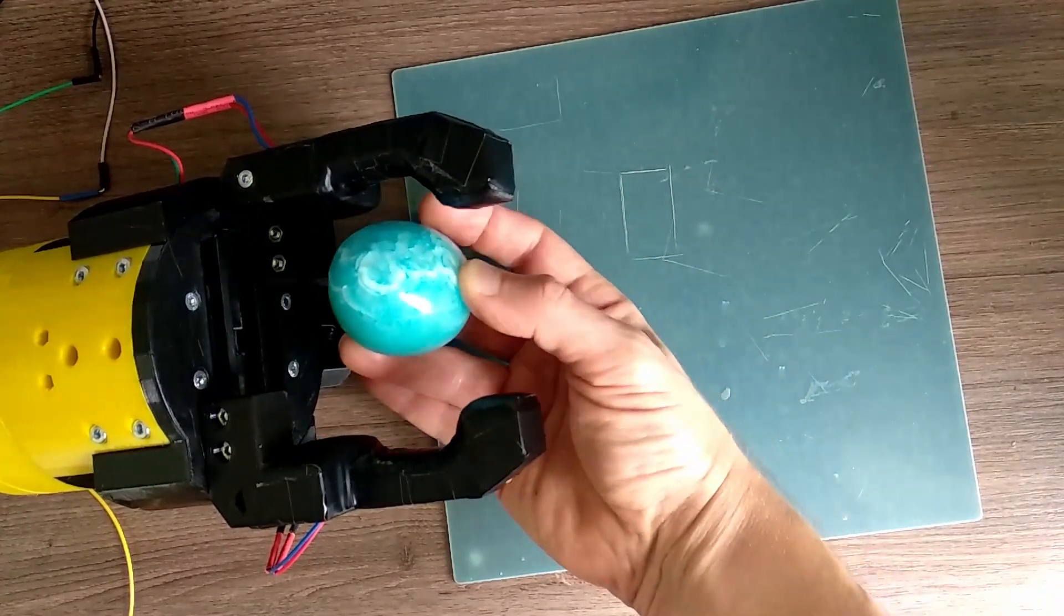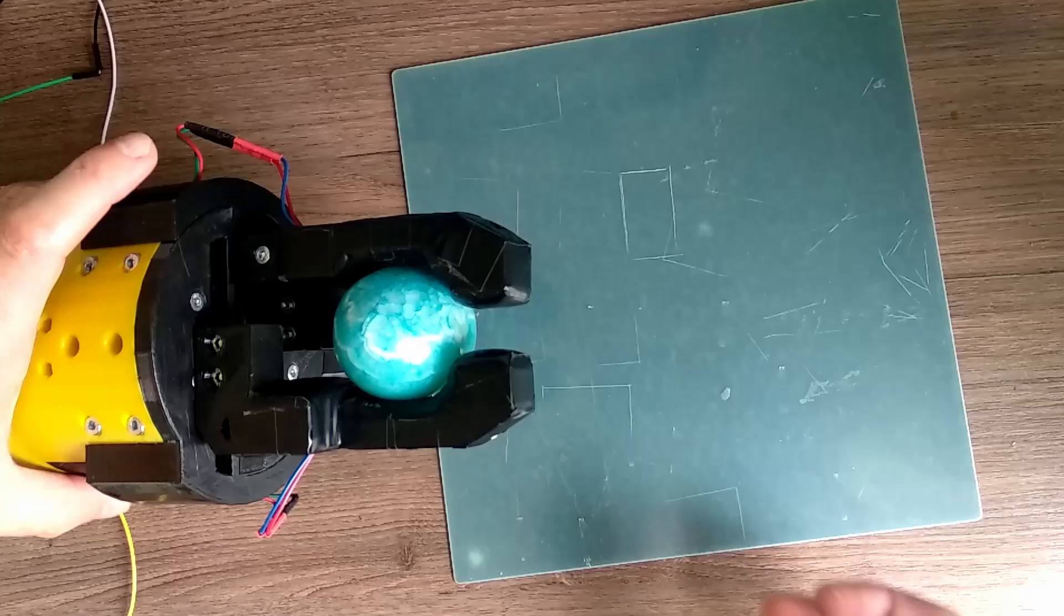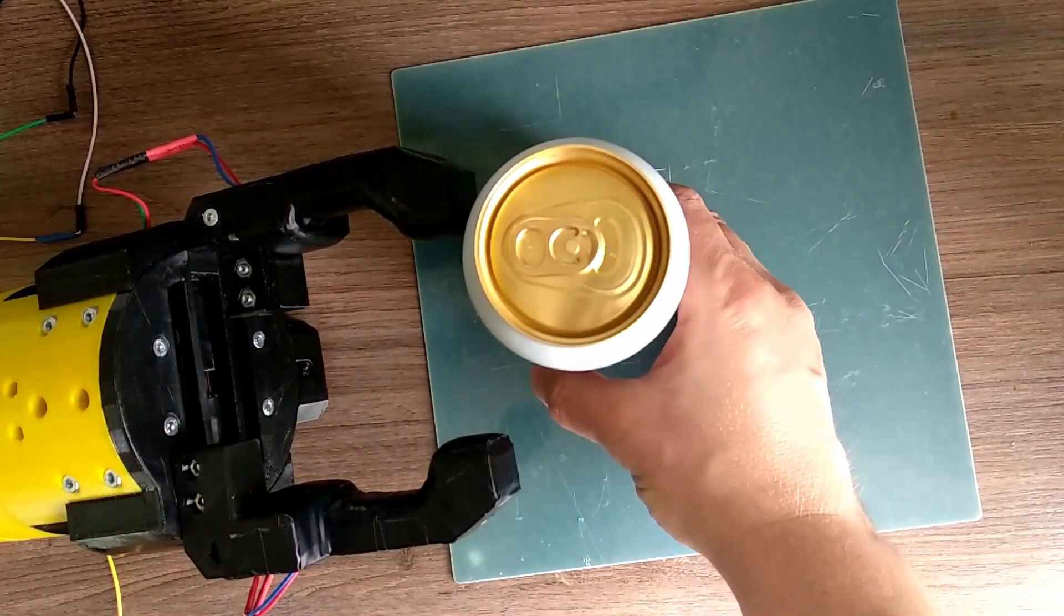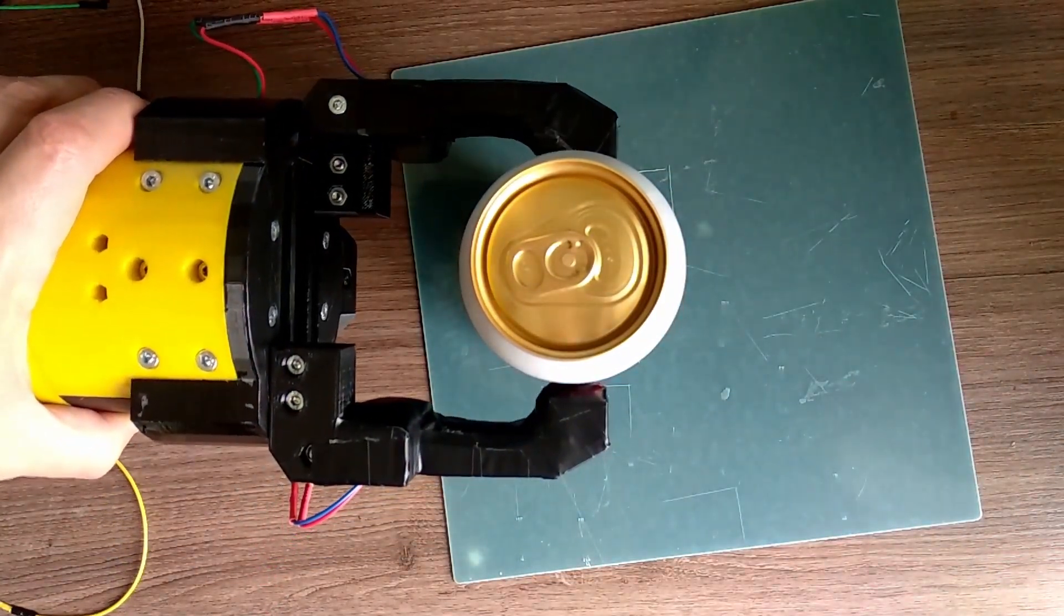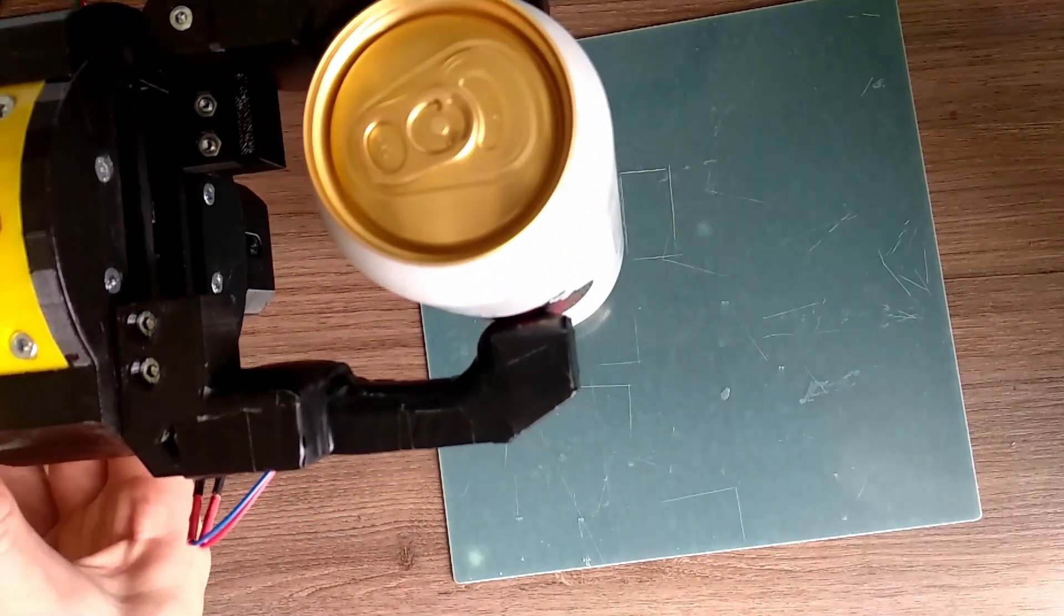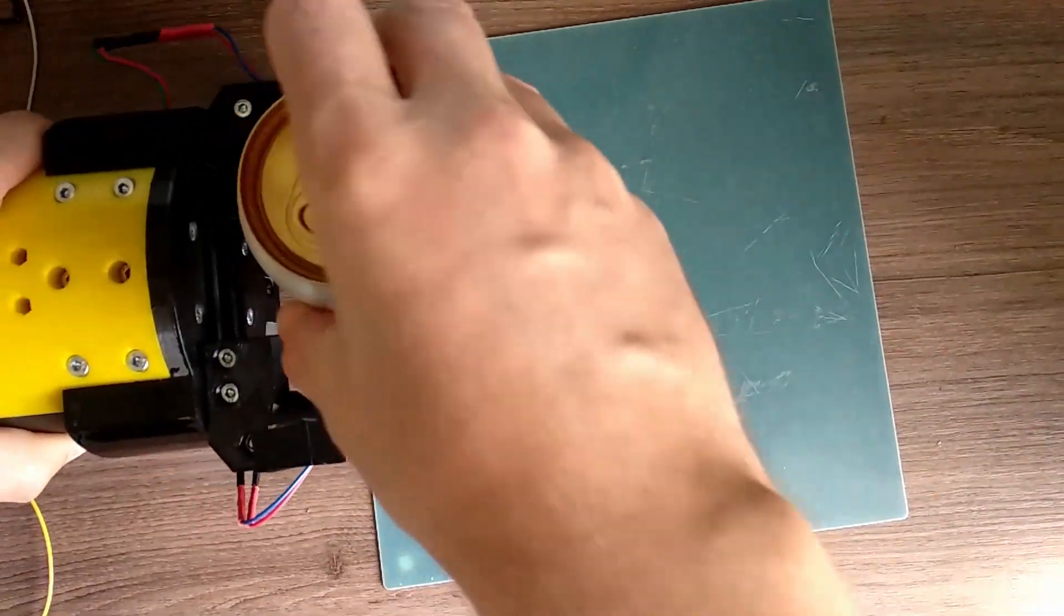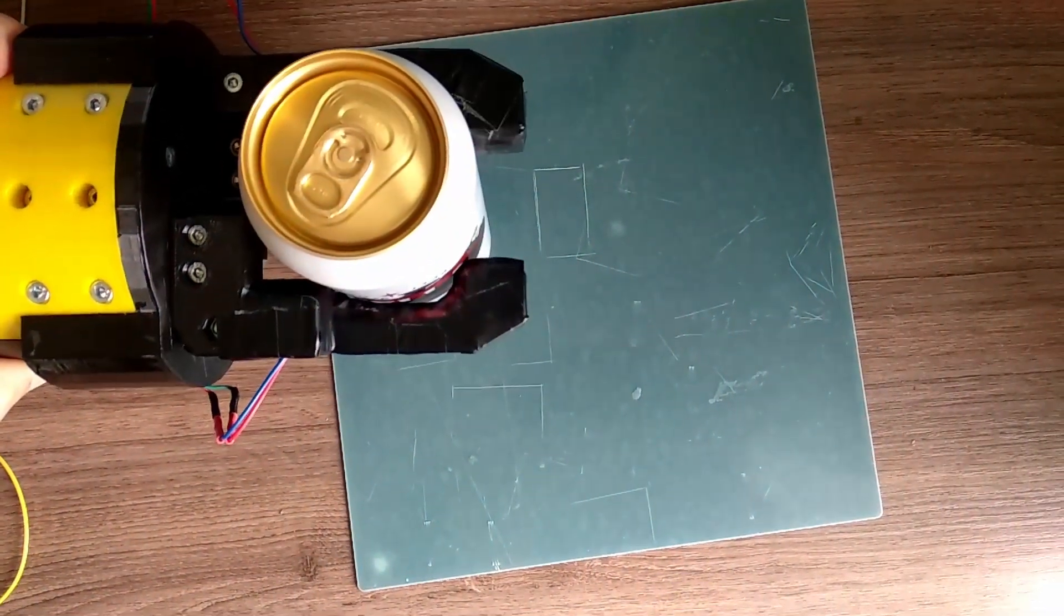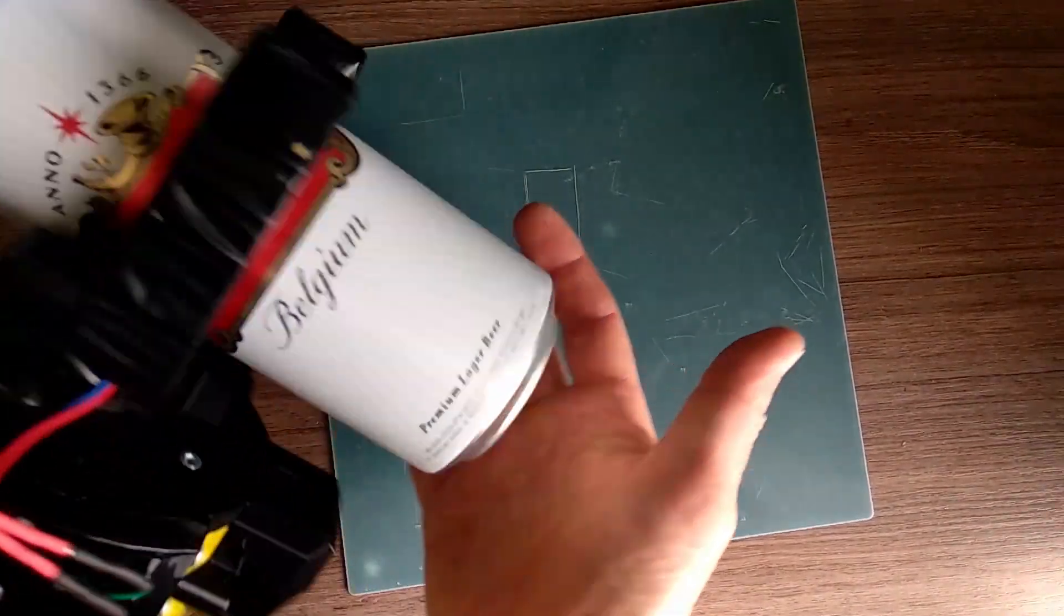But of course this region of the fingers is more suited for grasping objects like this. As you can see the weight of the object is increasing. By the way I'm planning to make the payload of my future robotic arm not less than two kilos. And the gripper managed to cope with this can of beer with no problem.